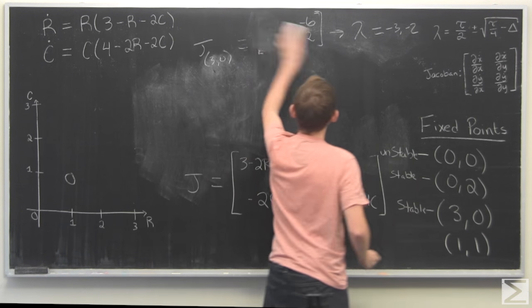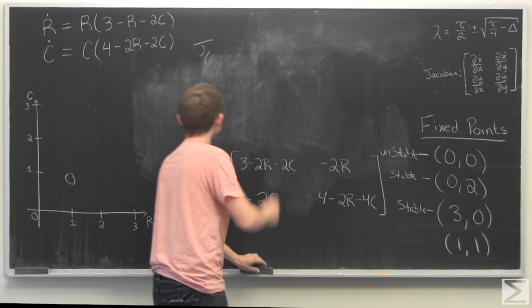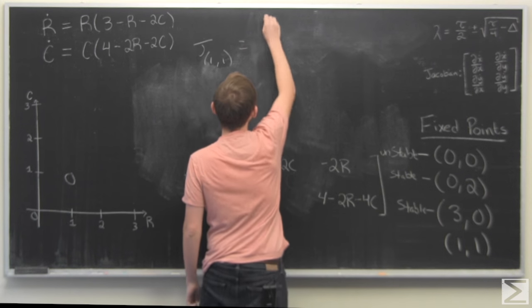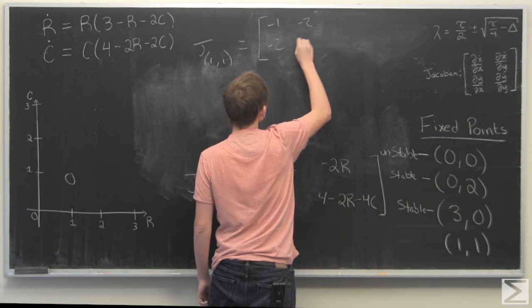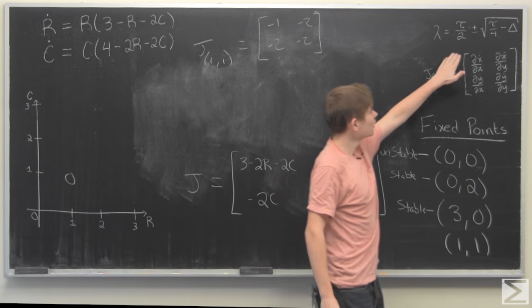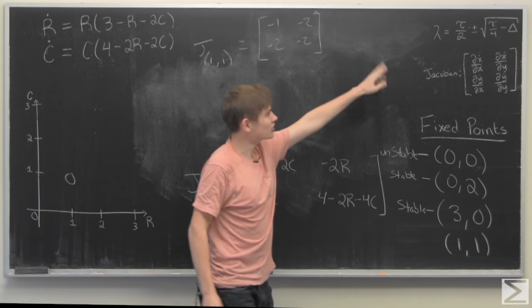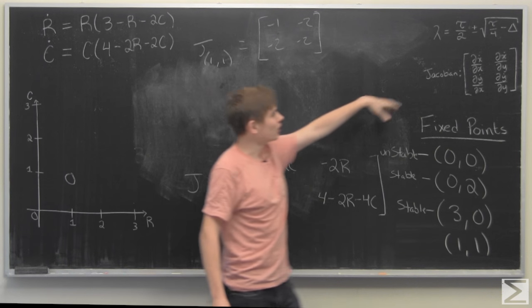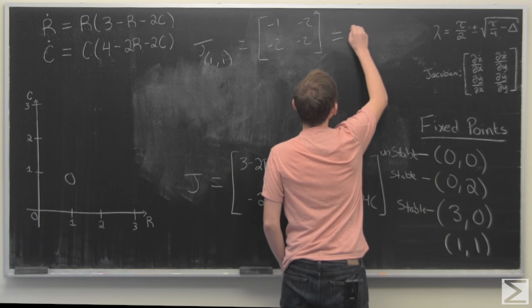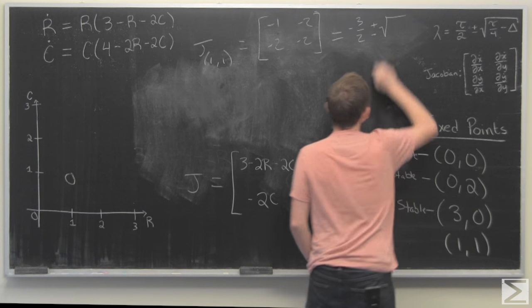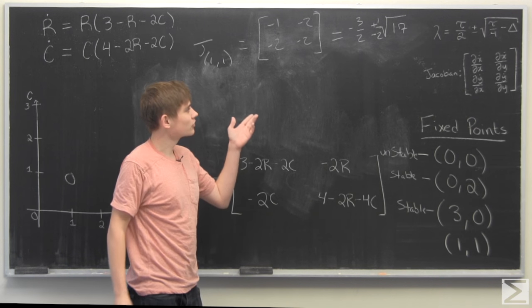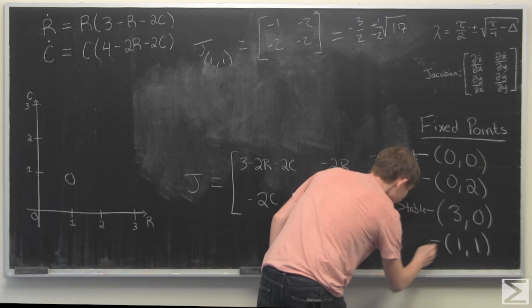And lastly, we have the fixed point 1, 1. For this, we get negative 1, negative 2, negative 2, negative 2. So now we have to evaluate these eigenvalues. We can do this using this nifty formula, where tau is the trace, so that is just the sum of the values on the diagonal. And delta is the determinant. I'm not going to do it out for you. I'll just write down that this is negative 3 halves plus or minus 1 half times root 17. Therefore, one's going to be positive, one's going to be negative. We have a saddle node.